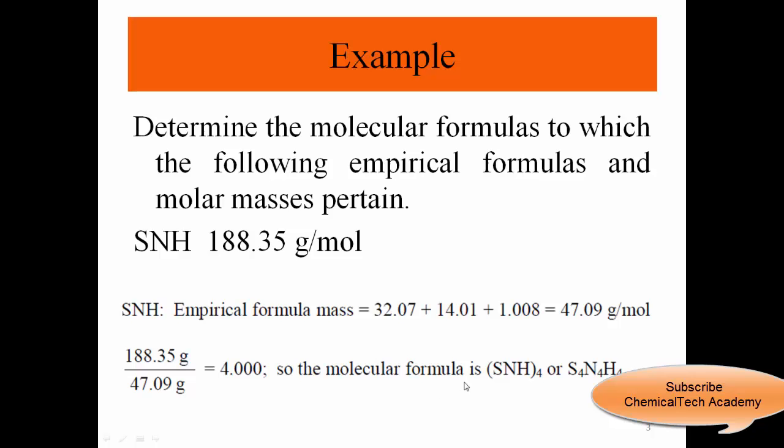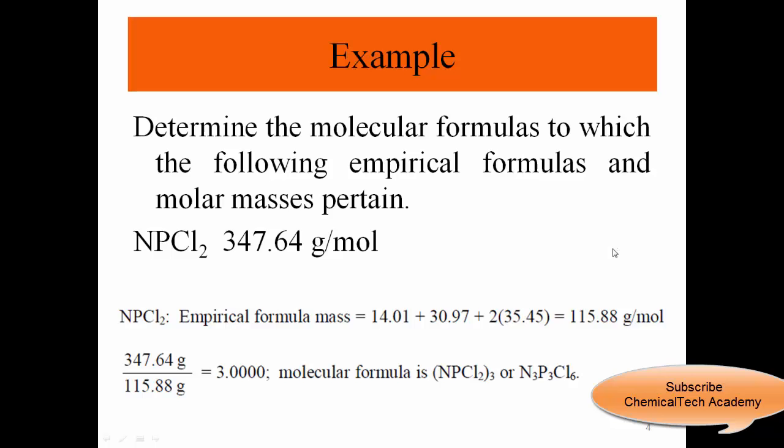Next example, we do the same thing here. We have NPCl2 and the molar mass is 347.64 grams per mole. First, we need to calculate the formula weight. We have nitrogen which is 14.01, phosphorus which is 30.97, and Cl which is 2 times 35.45.